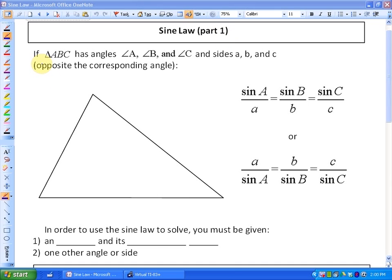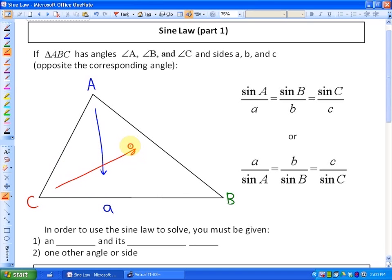First of all, how to get the sine law or what it means. If triangle ABC has angles A, B, and C being capitalized, so here's angle A, here's angle B, and here's angle C, and sides a, b, c that are opposite the corresponding angle. So side lowercase a, the sides are always lowercase, side lowercase b, and side lowercase c. If that's the way that the triangle is made up, then here's the sine law. Either sine of angle A over a is equivalent to sine B over b is equivalent to sine C over c, or you could rotate the whole proportion and say side a over sine of angle A is equivalent to side b over sine of angle B.